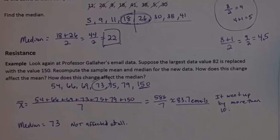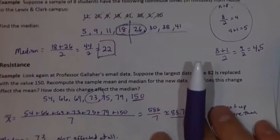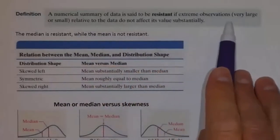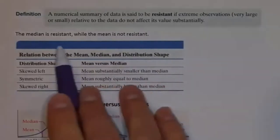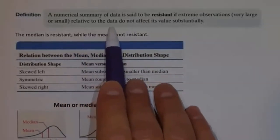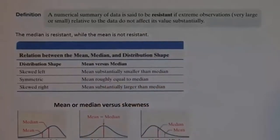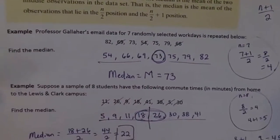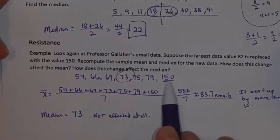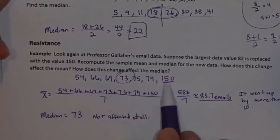This gets at the concept of resistance. A numerical summary of data is said to be resistant if extreme observations — a very large or very small value relative to the other values in the data set — do not affect its value substantially. The median is resistant: when we had the extreme value of 150 instead of 82, the median was not affected at all.